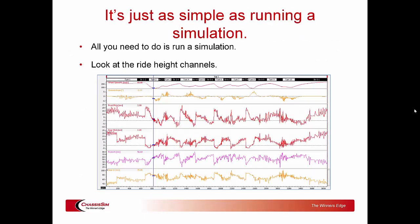When you are done, you log the data and you're looking at something like this. What we've got here is speed, steer, front pitch — which is the average of both front dampers — rear pitch — which is the average of our two rear dampers — and here's the money shot: front ride height and rear ride height. This will instantly tell you whether you've got a grounding problem and whether you're in the ride height envelope of where you need to be.